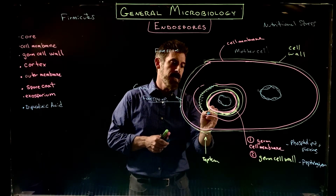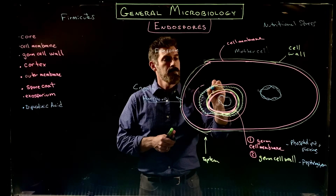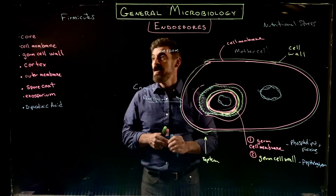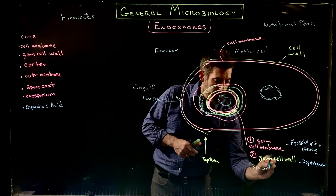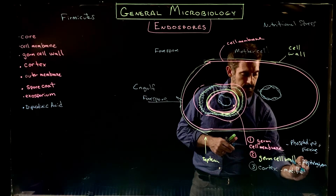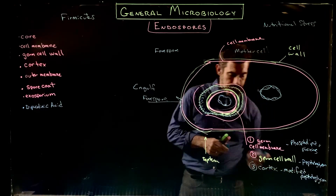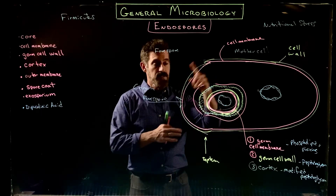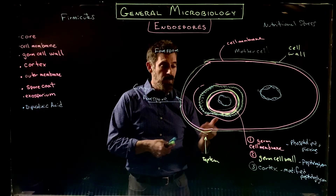That layer becomes what's called the cortex — our third layer. The cortex is modified peptidoglycan. It was the peptidoglycan cell wall of the mother cell, serving as a second sort of cell wall layer, but in this case it is chemically modified, so we now call it the cortex.